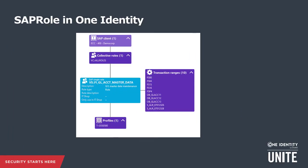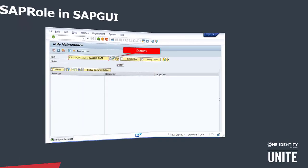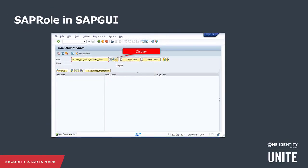The SAP role, as seen in the hyperview representation in One Identity Manager, contains all the relationships between roles and profiles, transaction ranges, and single and collective role relationships. The same information can be displayed in the SAP GUI using the PFCG transaction.